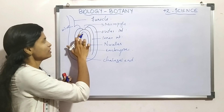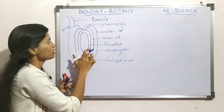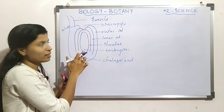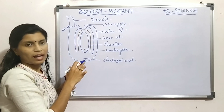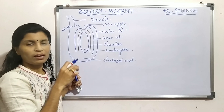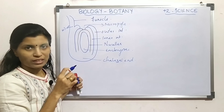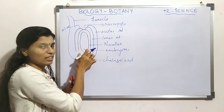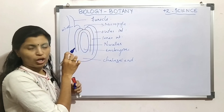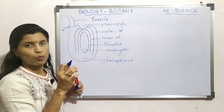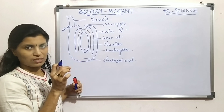In the center part, you can see an embryo sac, and this embryo sac is considered the female gametophyte. So we are going to learn about this topic — it is called Megasporogenesis.